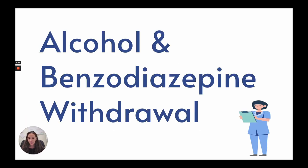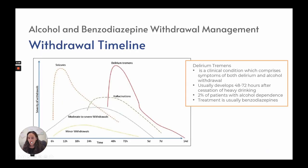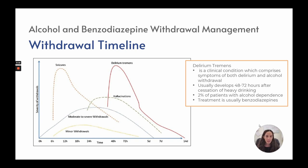Alcohol and benzodiazepine withdrawal affect GABA similarly, so the withdrawal timeline is the same for both. Seizures are a risk between 6 and 72 hours, peaking around 6 hours. Minor withdrawal occurs in the first 72 hours; moderate to severe withdrawal can last up to 5 or 6 days. Hallucinations can start around 24 hours and continue over the first week. Delirium tremens begins around 40 hours, peaks at 48 hours, then decreases over the next few days, reaching zero at about two weeks.